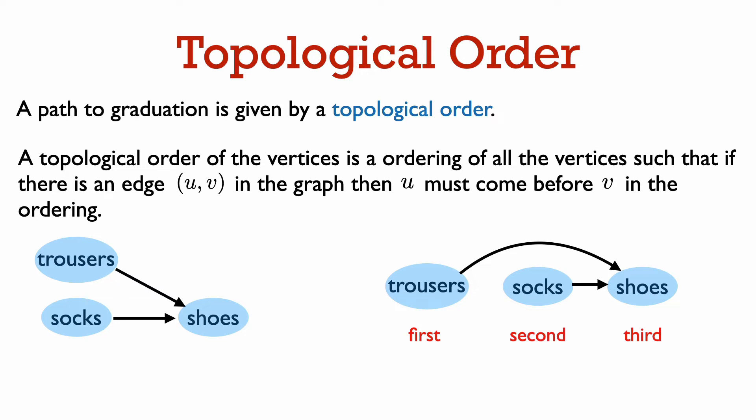You see that when we place the vertices on a horizontal line in topological order, then all edges go from left to right. You cannot have an edge going from right to left.